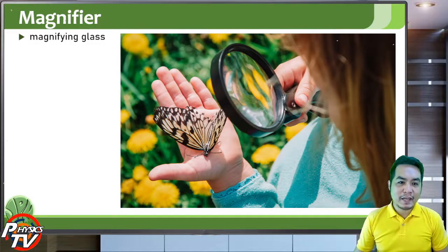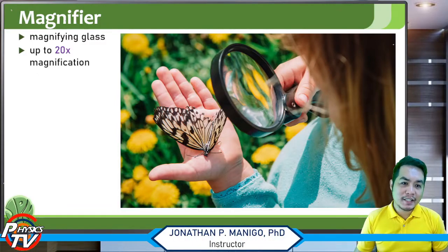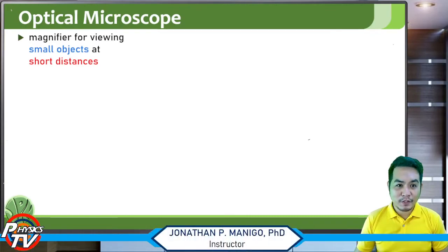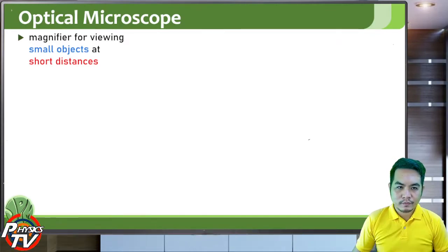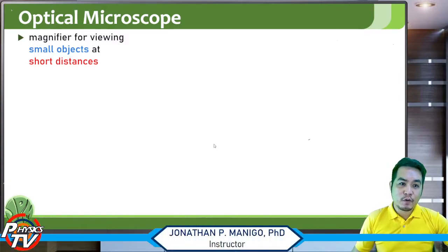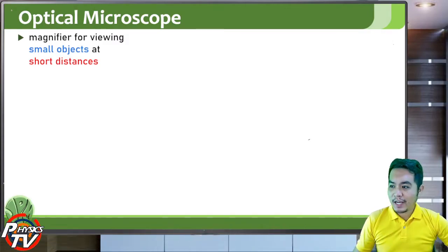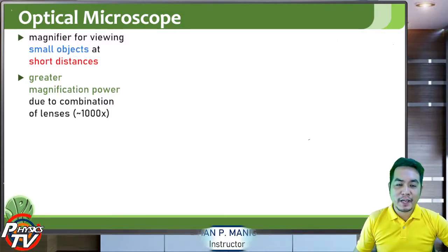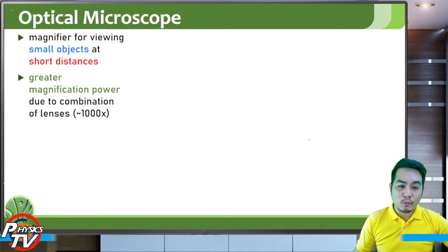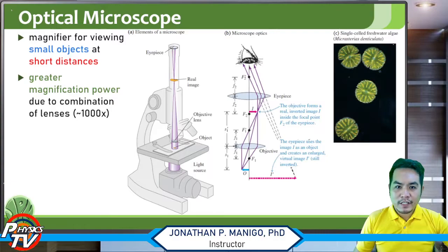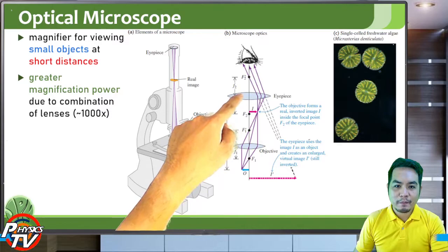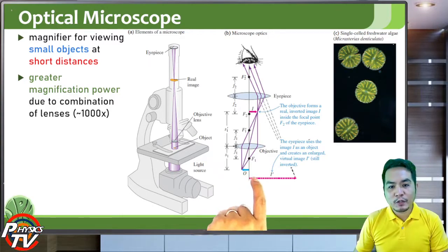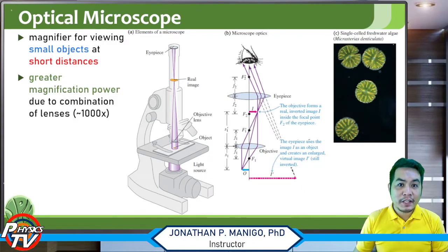The next instrument is the magnifier, or magnifying glass, which is limited to about 20 times magnification. A much more powerful magnifier is the optical microscope, used for viewing very small objects at very short distances. It can achieve magnification of up to 1,000, 2,000, 3,000, or even 4,000 times due to a combination of lenses. A simple microscope has two lenses — the eyepiece and the objective. The image created by the microscope is a virtual and inverted image of the object.